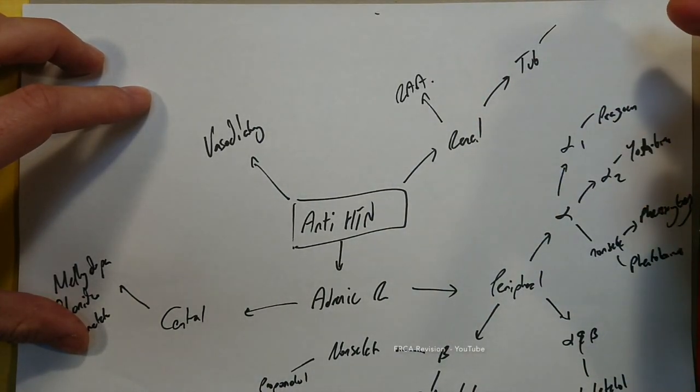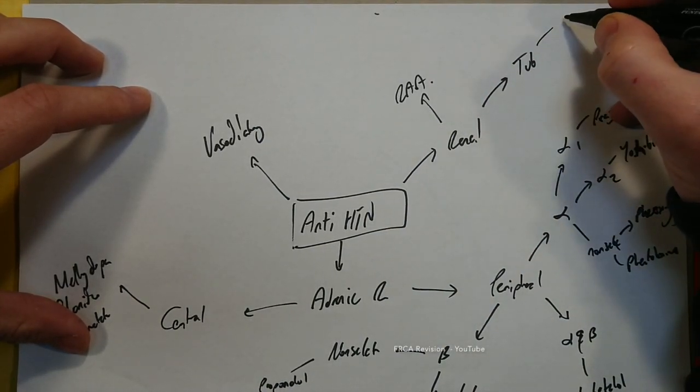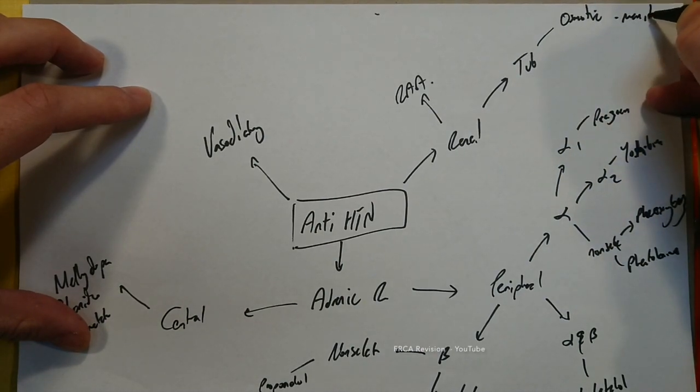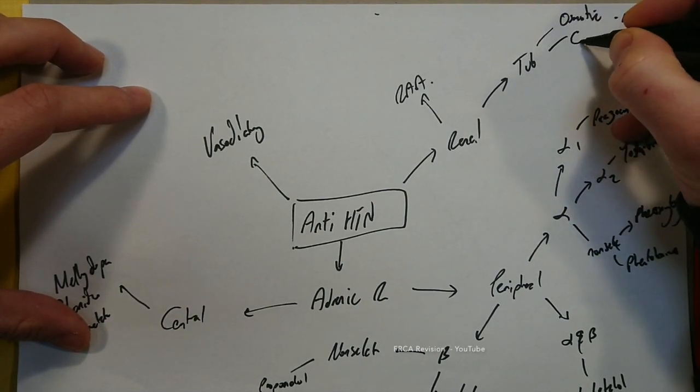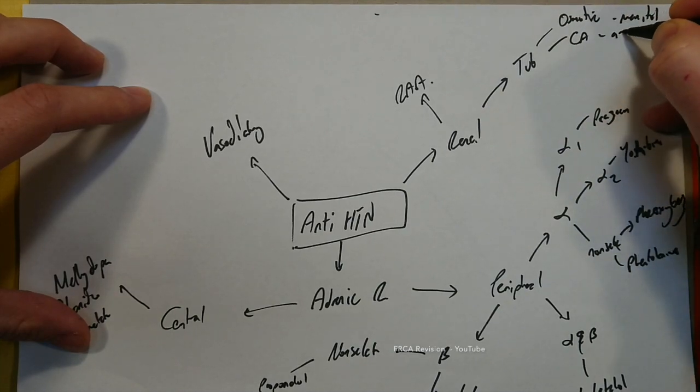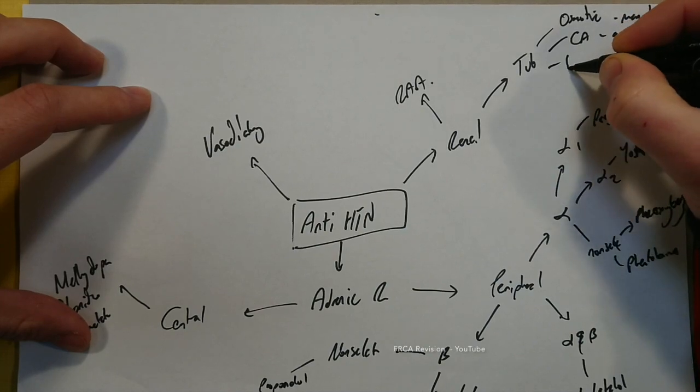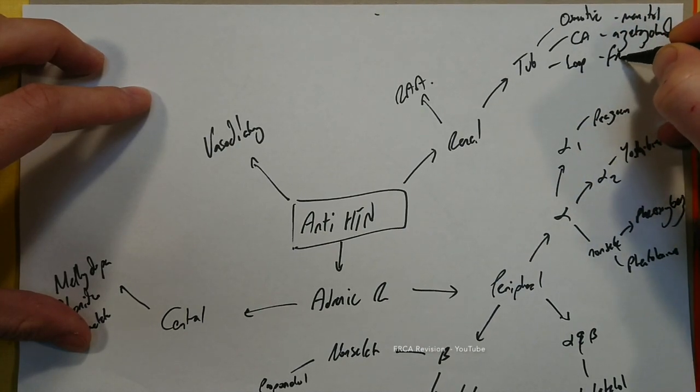And if we work through the nephron of the kidney, we can think about the osmotic, so mannitol. If we think about the carbonic anhydrase, you've got acetazolamide. If we think about the loop, we've got furosemide.